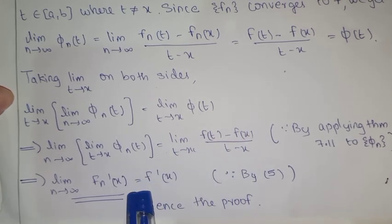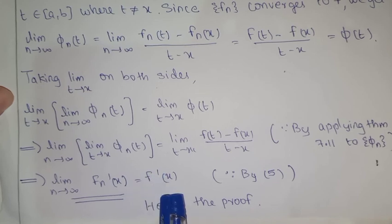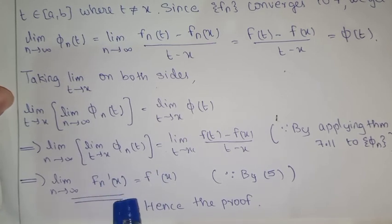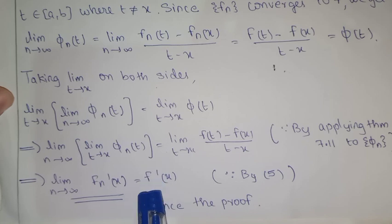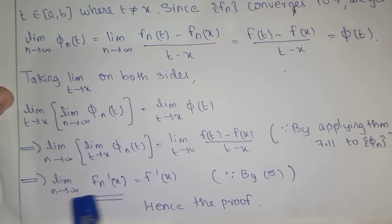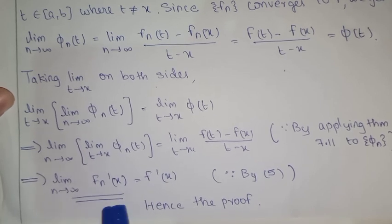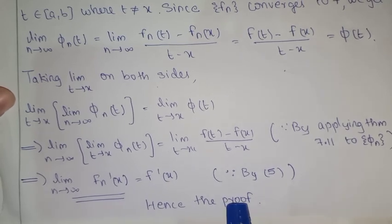By definition of φ(t), taking the limit as t → x gives f'(x). Therefore lim(n→∞) fn'(x) = f'(x). Hence the proof.